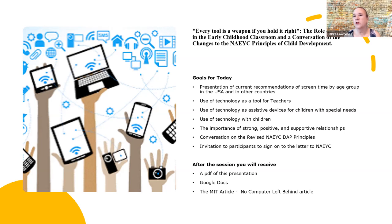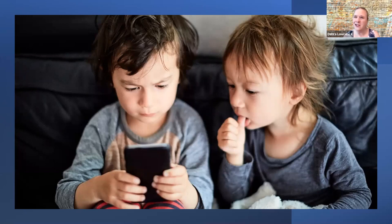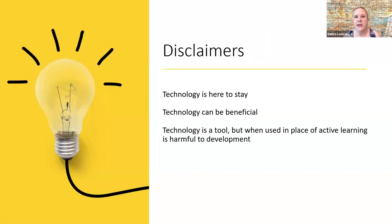So our goals for today — after the session you'll receive a PDF of this presentation, every breakout group's Google doc, and an MIT article on 'No Computer Left Behind' which I've used as one of the sources. We start here: maybe two-and-a-half or three-year-old children who are absolutely fascinated. We know children learn through imitation — fascinated with what they see their families use. But is that how children learn? We really need to focus on and think about this.